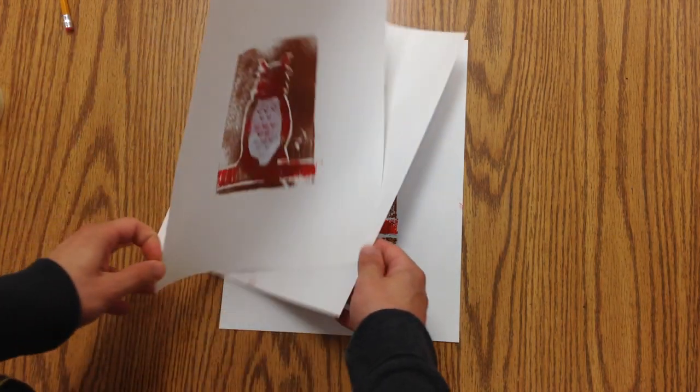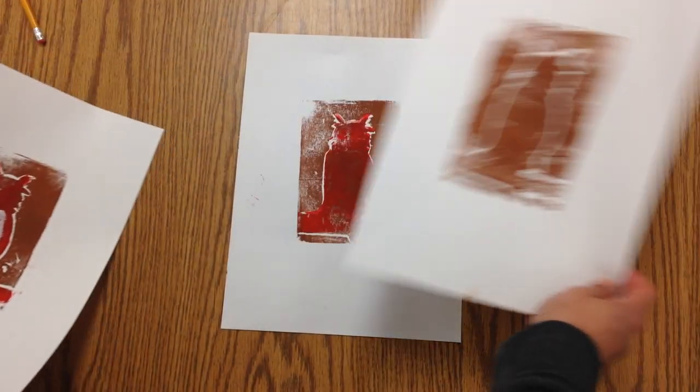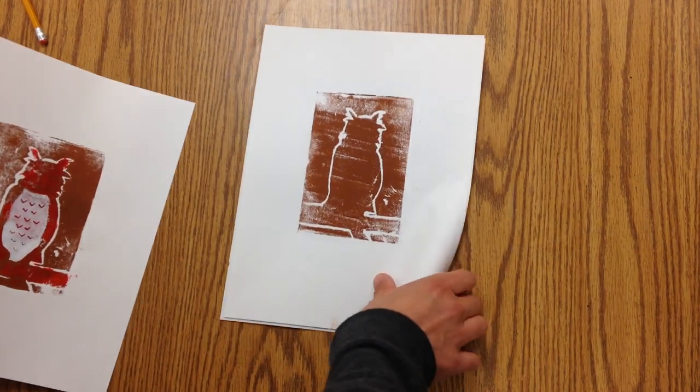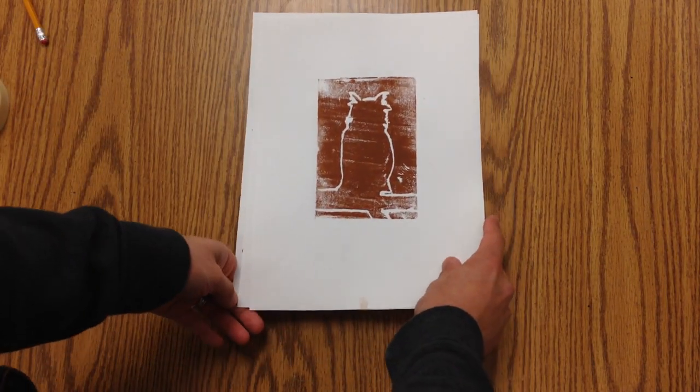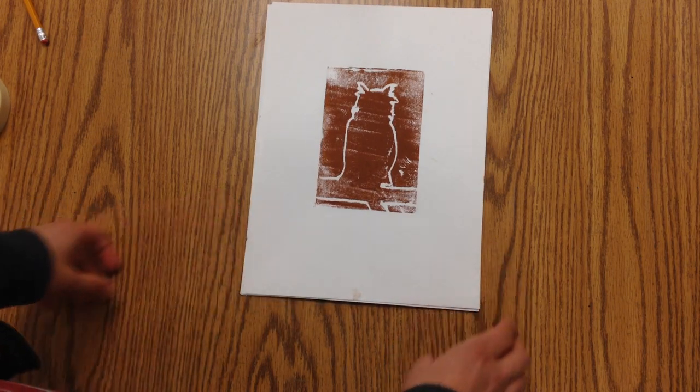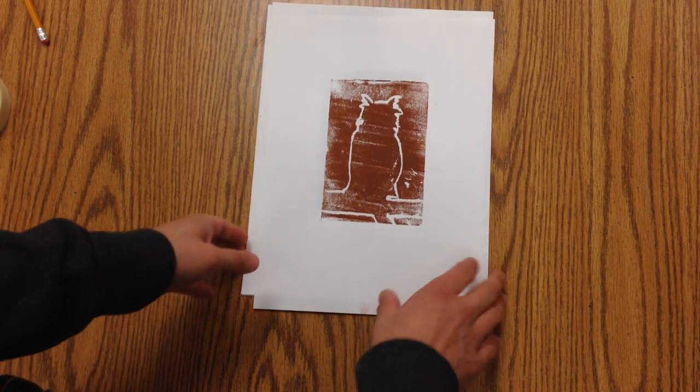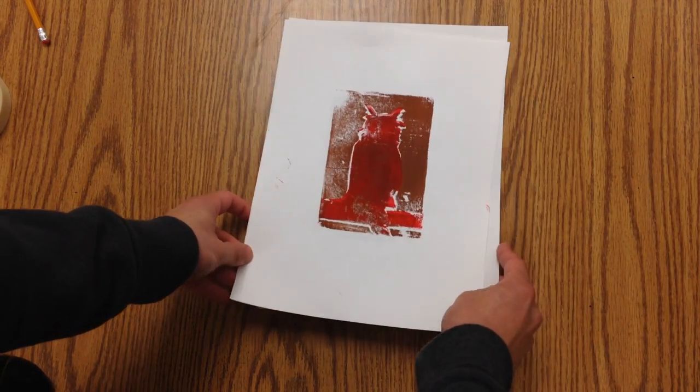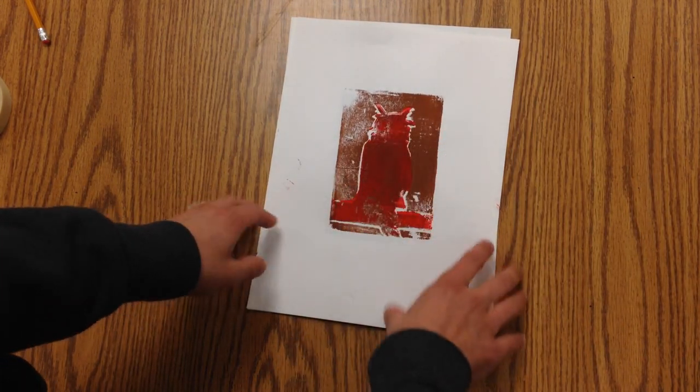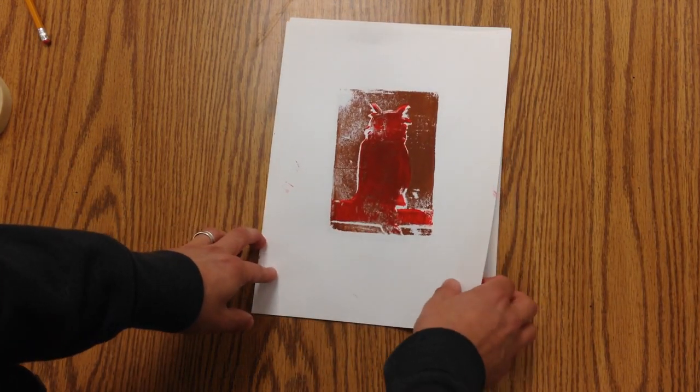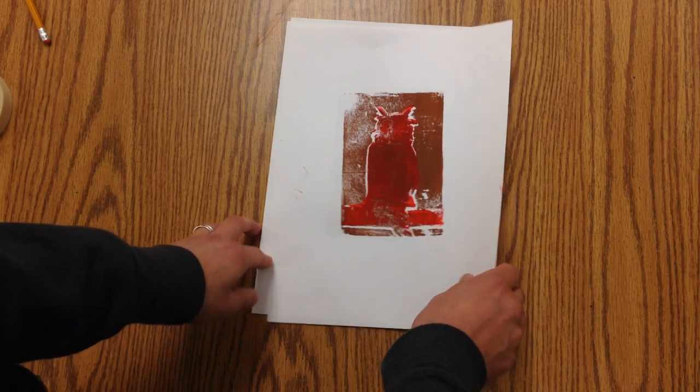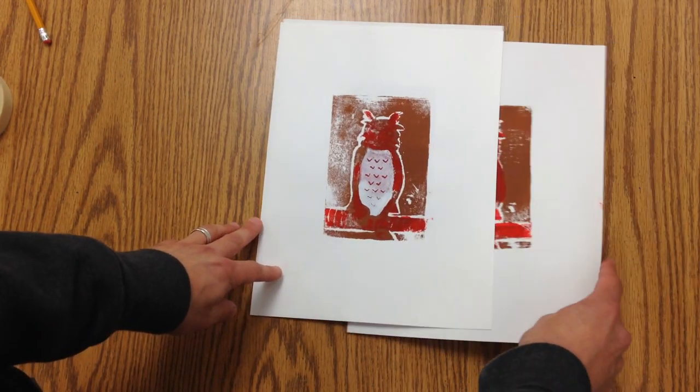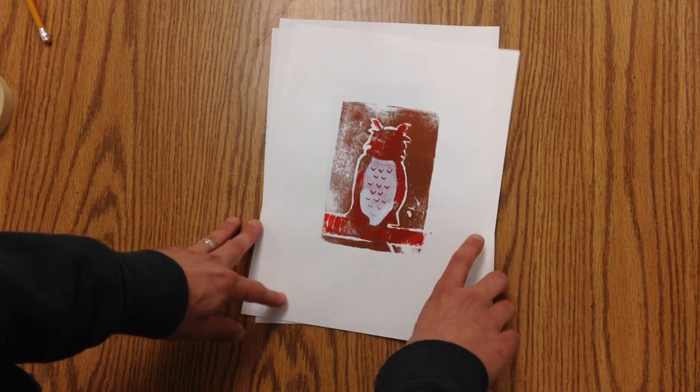The first layer that I did was just a brown layer with the outline of my owl. Then I cut out the outside and printed red on top of the brown. Finally, I cut out just the middle section and printed white on top.